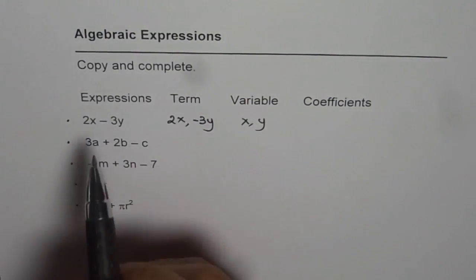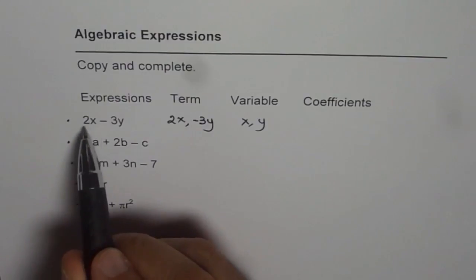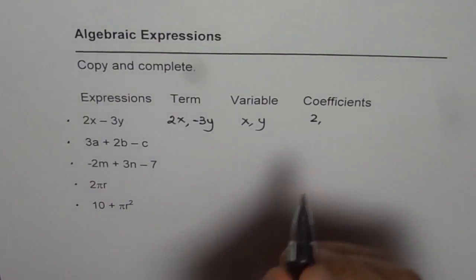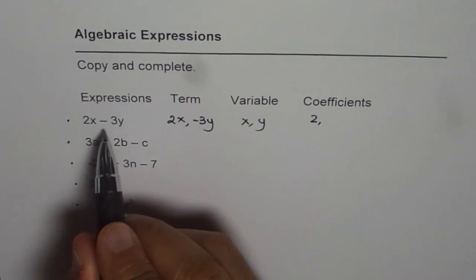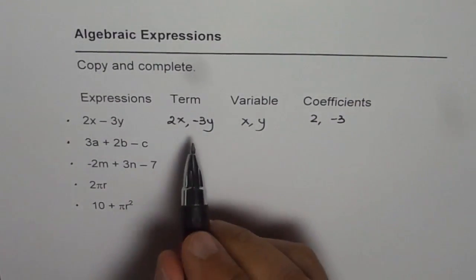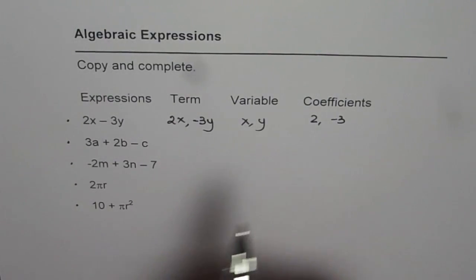The coefficients. Coefficients are the numbers associated with the variables, the constants. So with x, the coefficient of x is 2, so we can write 2 which is the coefficient of x, and the coefficient of y is minus 3. So you associate that sign with the number, so minus 3 is the coefficient of y. I hope you get the concept.